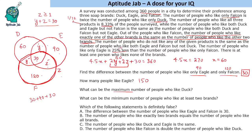What can be the maximum number of people who like Duck? The number of people who like Duck is 2Y plus 90. To find the maximum, we need to maximize Y, which means Z should be minimum. Since Z must be at least 1, minimum Z is 1 and maximum Y is 29. So we get 2×29 = 58 plus 90, giving an answer of 148.